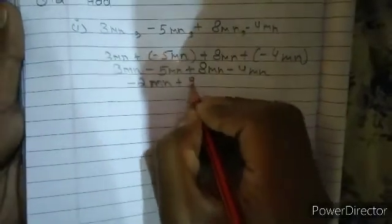Now this we will write plus 8mn minus 4mn. Now this will be minus 2mn plus 8mn equals 6mn because plus minus minus 8 minus 2 is 6 and this is bigger 8, so we have write it positive sign minus 4mn.